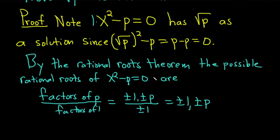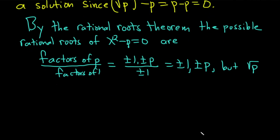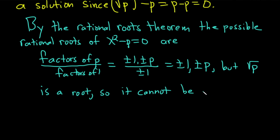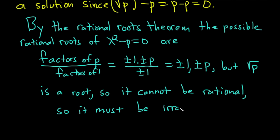So by the rational roots theorem, the possible rational roots are plus or minus 1 and plus or minus p. But the square root of p is a root, so it cannot be rational — because if it was, it would be among this list, and it's not. Therefore it must be irrational. Kind of an interesting way to approach the problem.